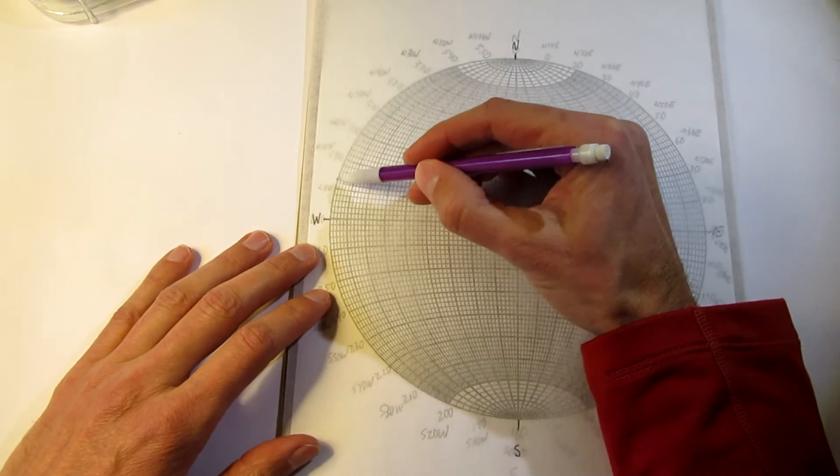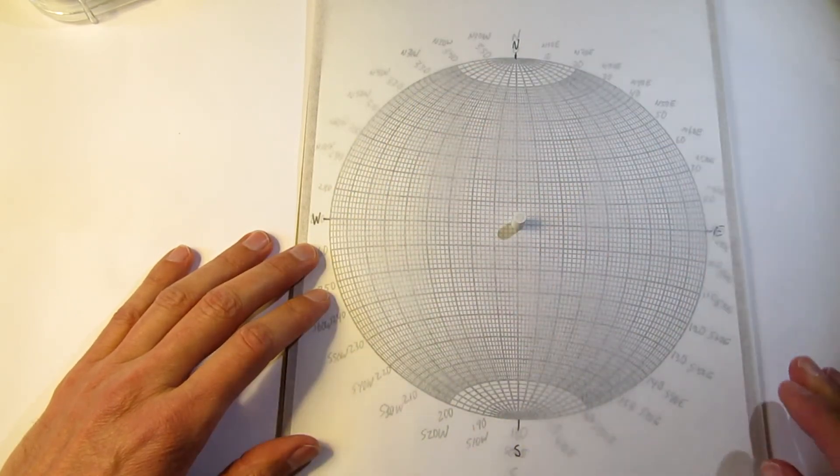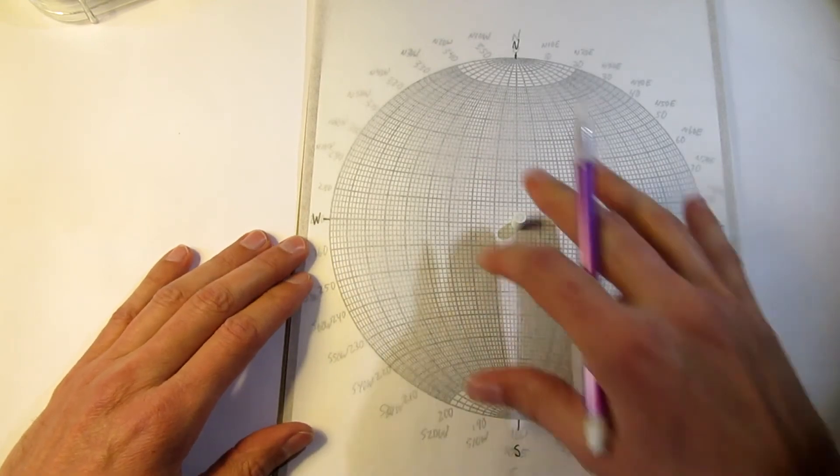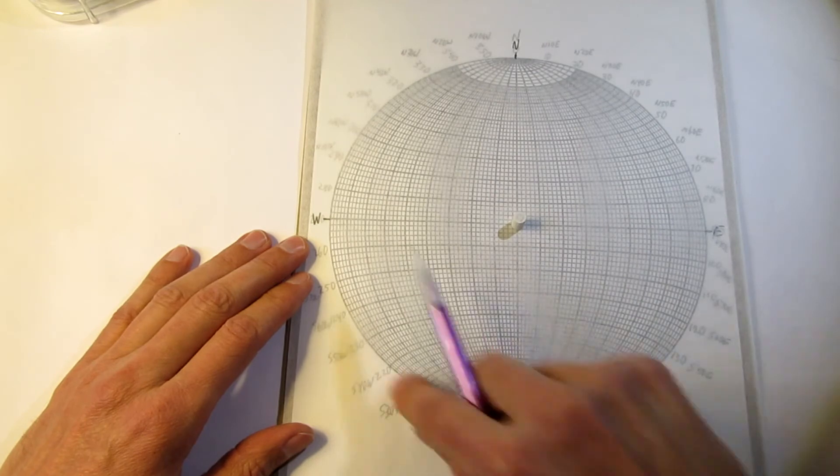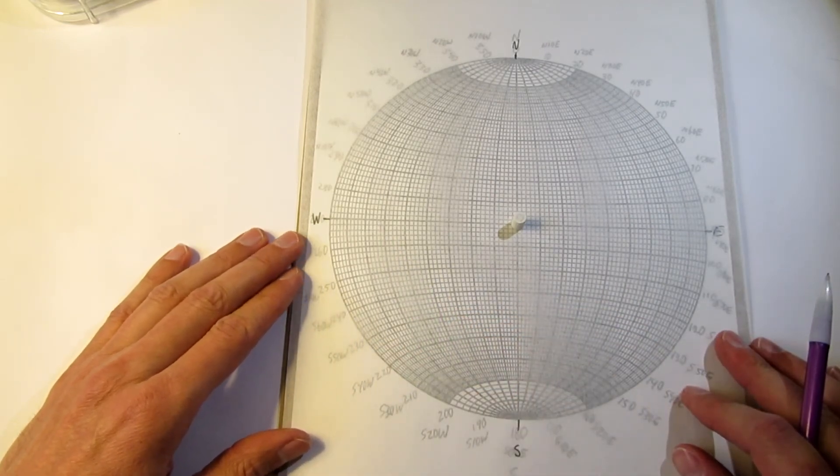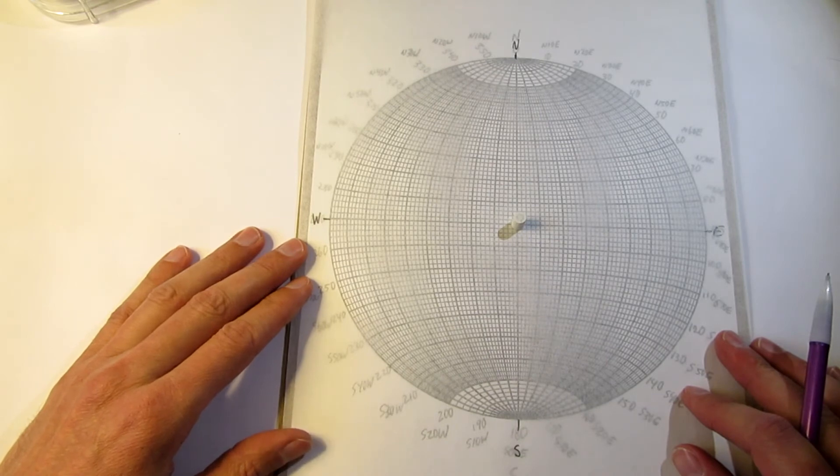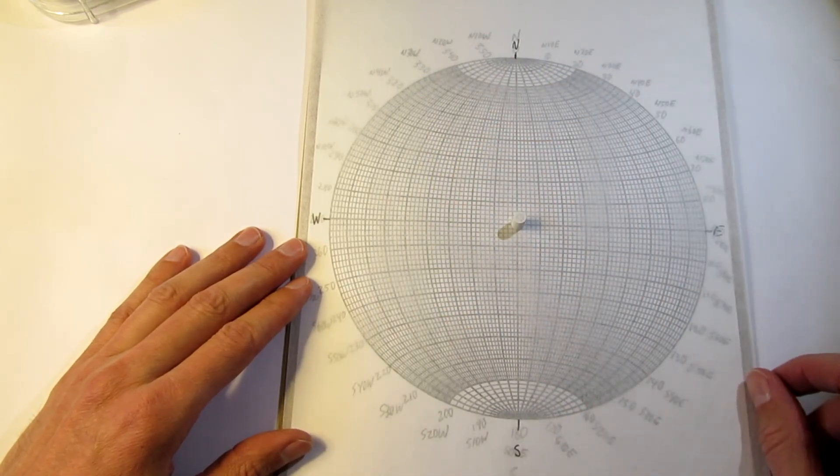And depending on your use, you may want to trace the outside and have a circle in there. However, I do most of my analysis on the stereo net itself, and the circle is easily seen through the tracing paper. So I don't take the time to do that. So from this point, you're ready to start plotting data.